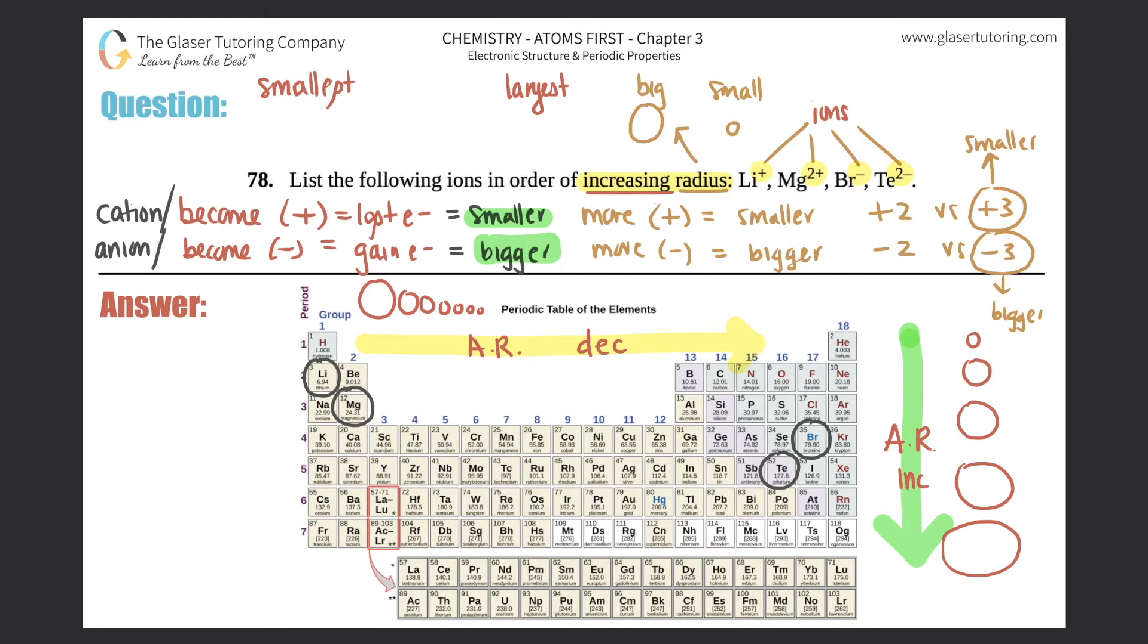Remember, smaller ones are positive charge. So between these four, magnesium and lithium would be the smaller of the four. Remember, the more positive, the smaller you are. Which one would be the smallest of them all?